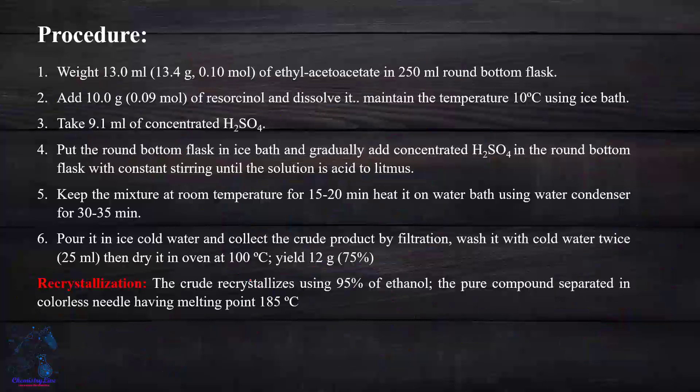The procedure: Weigh 30 ml of ethyl acetoacetate in 250 ml round bottom flask. Add 10 gram of resorcinol, dissolve it, maintain 10 degree temperature using ice bath, then add 9.1 ml of concentrated sulfuric acid. Put the round bottom flask in ice bath, gradually add concentrated sulfuric acid with constant stirring until the solution is acidic to litmus. Keep the mixture at room temperature 15-20 minutes, then heat it on water bath.